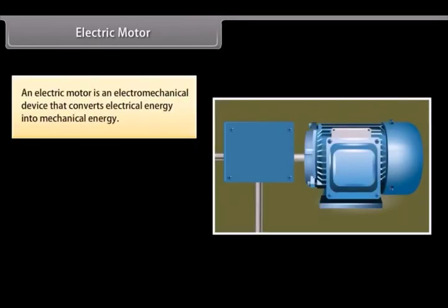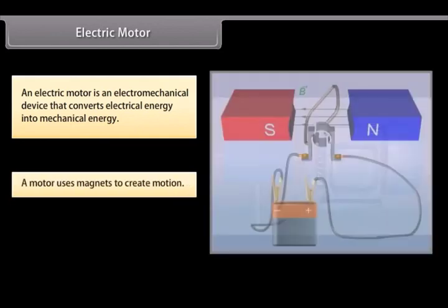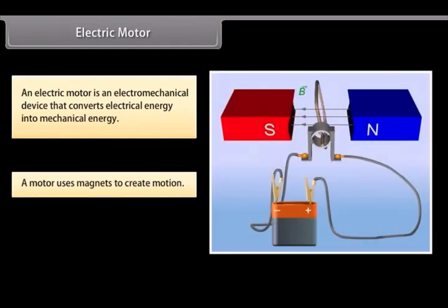Electric Motor. An electric motor is an electromagnetical device. It converts electrical energy into mechanical energy. Let us look at how electric motors work. A motor uses magnets to create motion. Inside an electric motor, the attracting and repelling forces of a magnet create rotational motion.